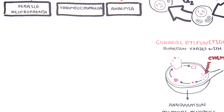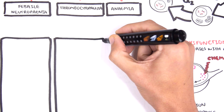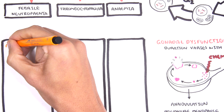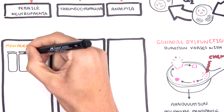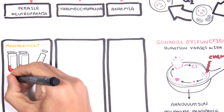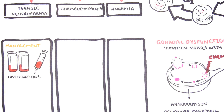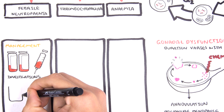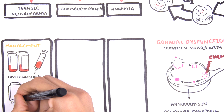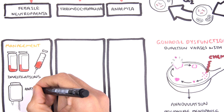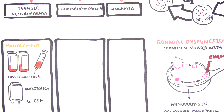It's important to know how to manage each of these complications. With febrile neutropenia, if someone on chemotherapy presents with a fever, a full septic workup is required — including blood cultures, chest X-ray, and urine cultures. It is also important to give prophylactic antibiotics until an organism is possibly identified. Another important drug to give is granulocyte colony-stimulating factor (G-CSF), which can help stimulate the production of neutrophils.